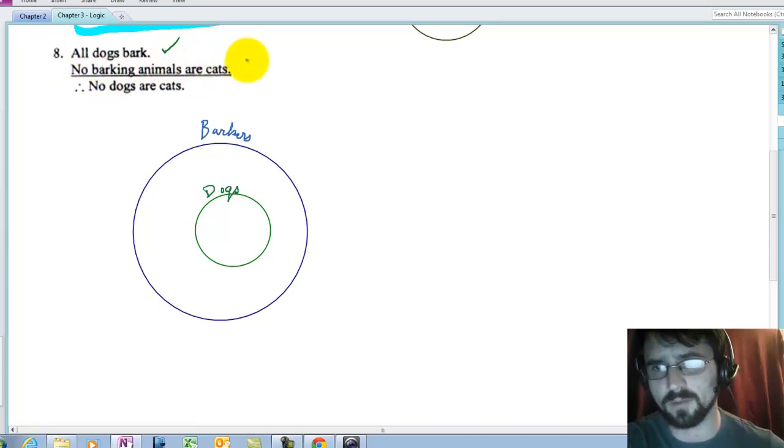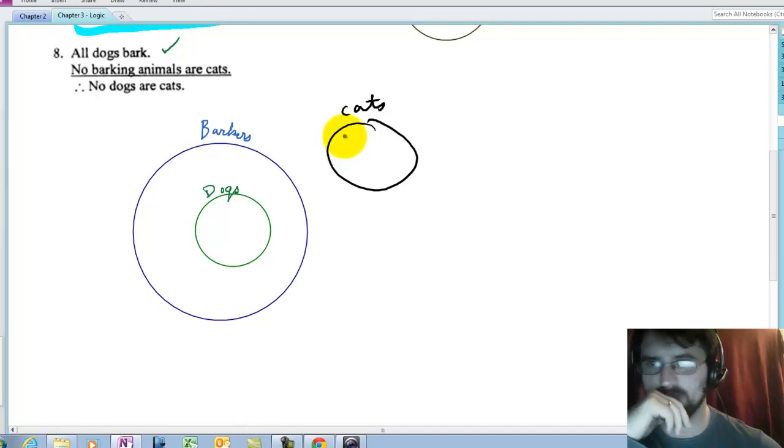No barking animals are cats. Barking animals has to be disjoint from cats. Here's cats. Have I drawn that? Is there any other way of drawing that? Well, they can't overlap and cats can't be inside because they're saying no barking animals are cats. So they have to be disjoint.